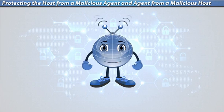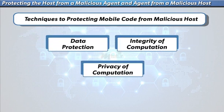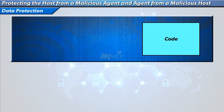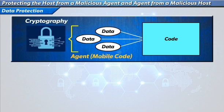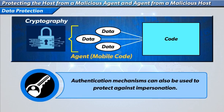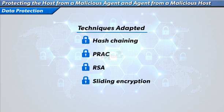Now let us see how to protect mobile code from a malicious host. The first technique is data protection, where the integrity of data collected by a mobile agent is protected using cryptographic techniques. Authentication mechanisms can also be used to protect against impersonation. Techniques such as hash chaining, Partial Result Authentication Code (PRAC), RSA-based encryption, and sliding encryption are adapted to maintain data integrity.